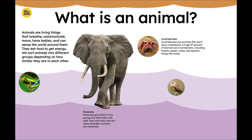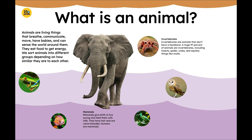Invertebrates. Invertebrates are animals that don't have a backbone. A huge 97% of animals are invertebrates, including insects, spiders, crabs, and squishy things like snails.